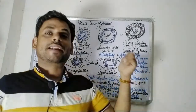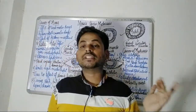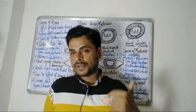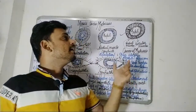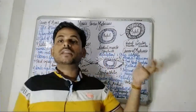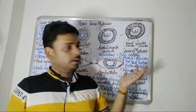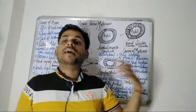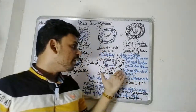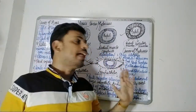The third cause of mydriasis is third nerve paralysis — paralysis of the third cranial nerve, the oculomotor nerve. The fourth cause is belladonna poisoning.